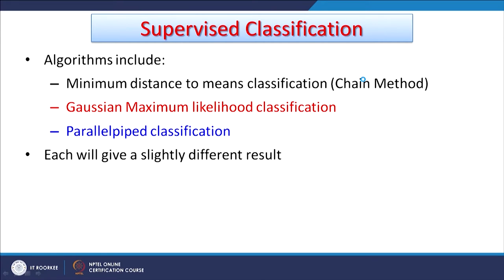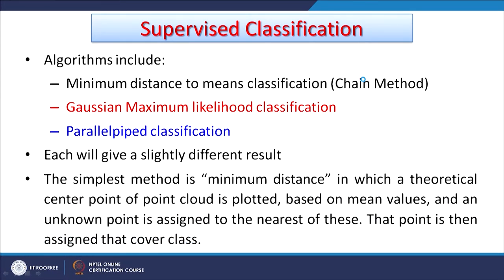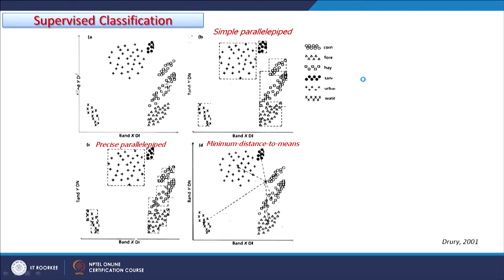If we use the same training set on the same image but classify using three different algorithms, we are highly likely to get three different results. The simplest method — minimum distance to mean — plots the theoretical center point of the cluster or point cloud. Based on the mean values of that cluster, an unknown point is assigned to the nearest cluster center and is then assigned the cover class.